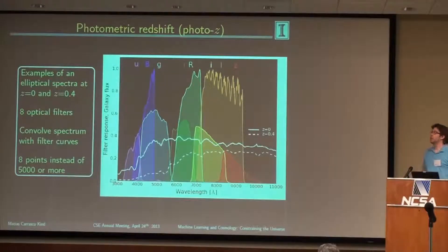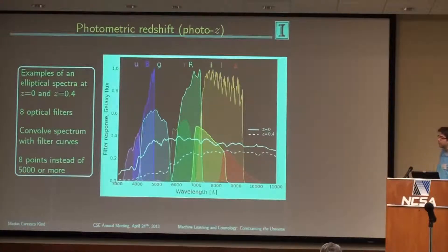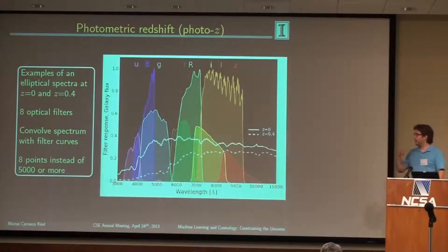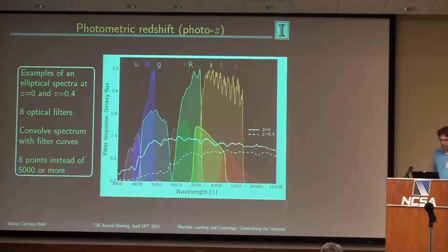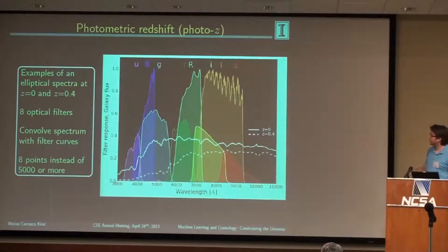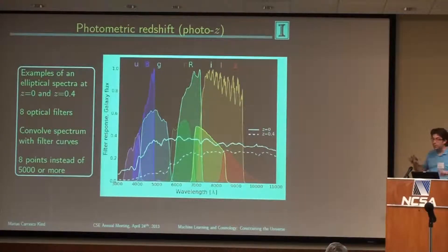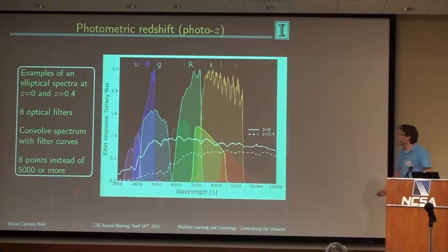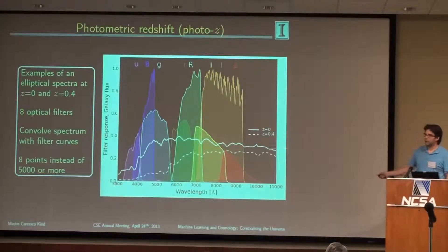But taking spectra is very expensive in terms of time and money, and it's very hard to do for millions of galaxies. To do a statistical analysis, you need millions — hundreds of millions — of galaxy measurements. For that, the only option is measuring distances through photometry: taking images of galaxies at different filter wavelengths. The challenge is trying to measure the distance to a galaxy using 8 or 10 photometric points instead of the 5,000 points you'd have from a full spectrum.